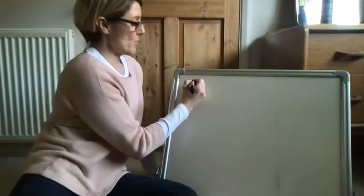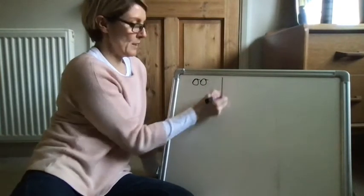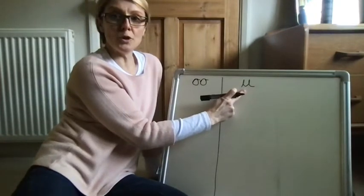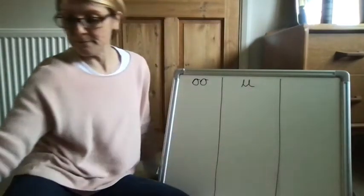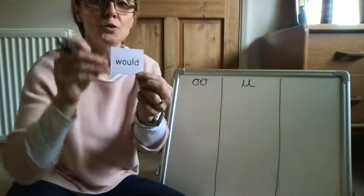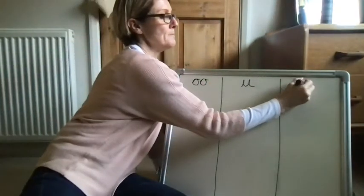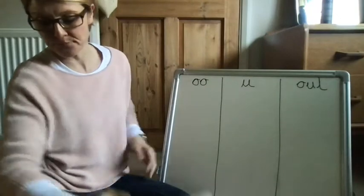So today we're going to be looking at this 'oo' sound. You should have your piece of paper with the different ways we spell 'oo' written at the top. So we're going to have 'oo', we can also spell it with just a 'u', and also with 'u-e'.